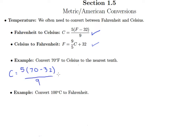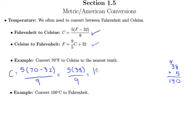We have to remember our order of operations here — we do what's inside the parentheses first. 70 minus 32 is 38. And of course we multiply what's on top next, so we get 190 over 9.